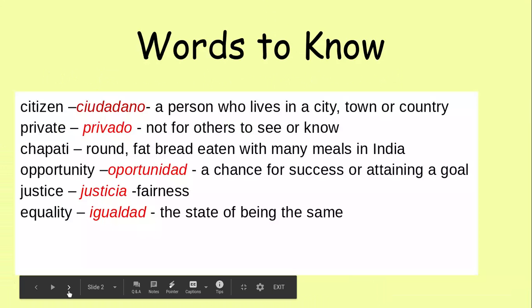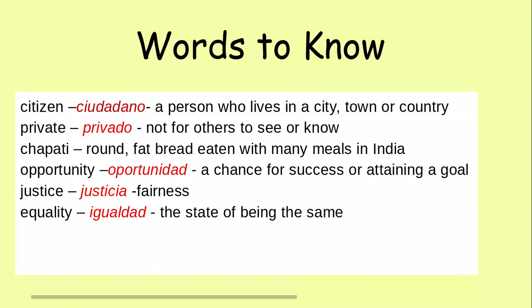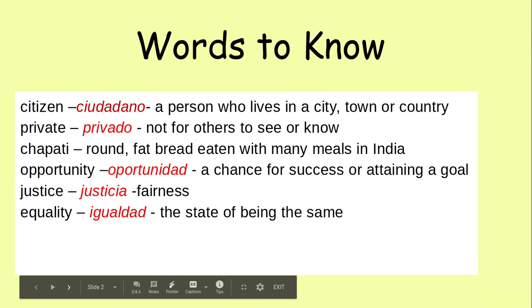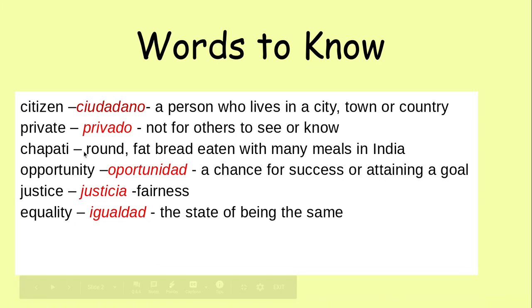Words to know: citizen — ciudadano — a person who lives in a city, town, or country. Private — privado — not for others to see or know.